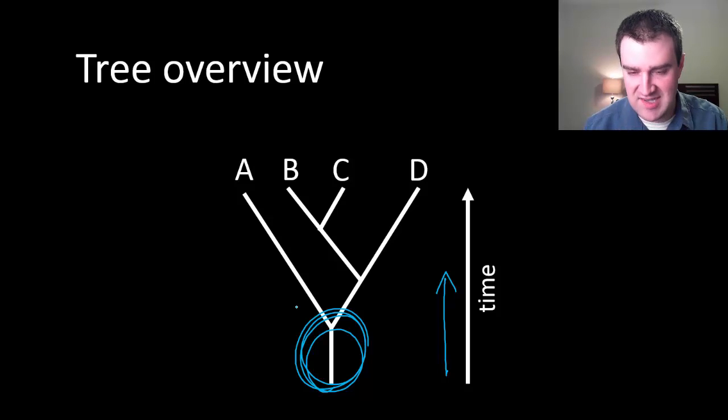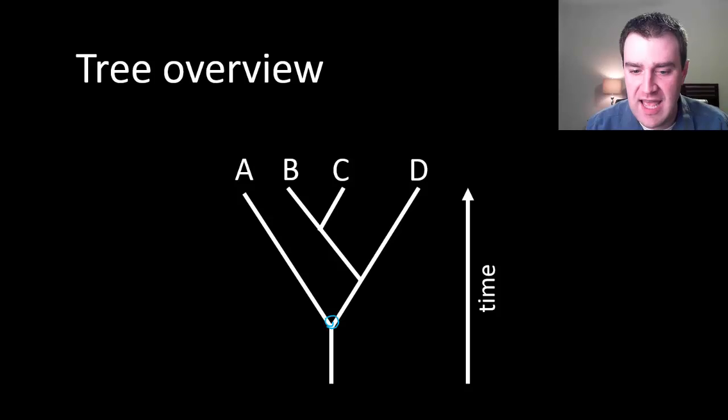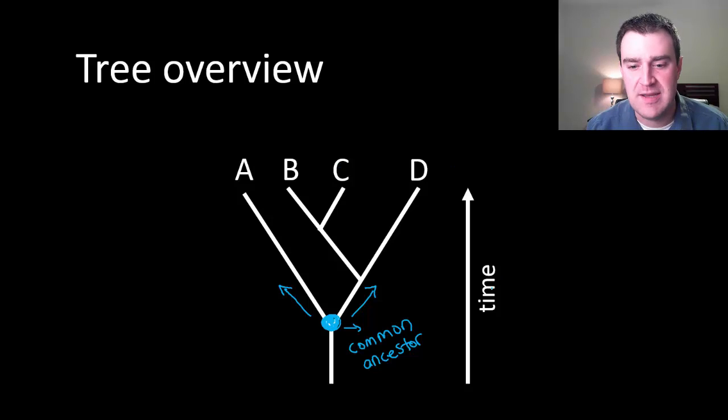some kind of common ancestor here, which is what every branching point represents, also called a node, represents some kind of common ancestor species to all four of the species. Then speciation occurred and some groups went this way, leading to modern species A, and other groups went this way, leading to modern species B, C, and D.